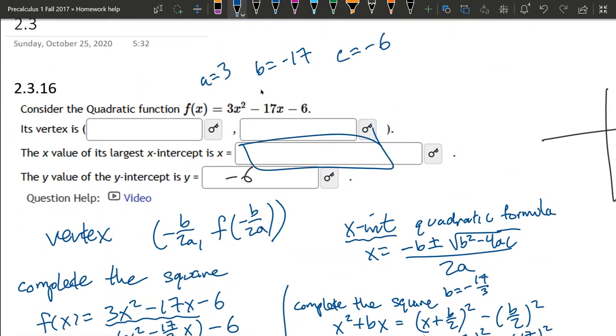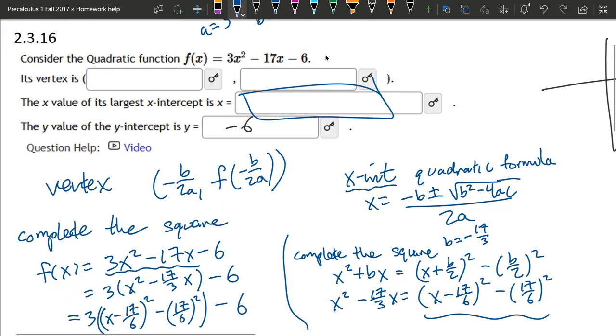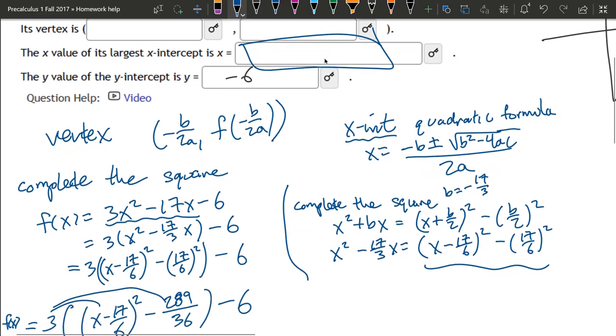So the larger x value is always going to be the one with the plus. So that would be the larger x value. And that would go right up here.